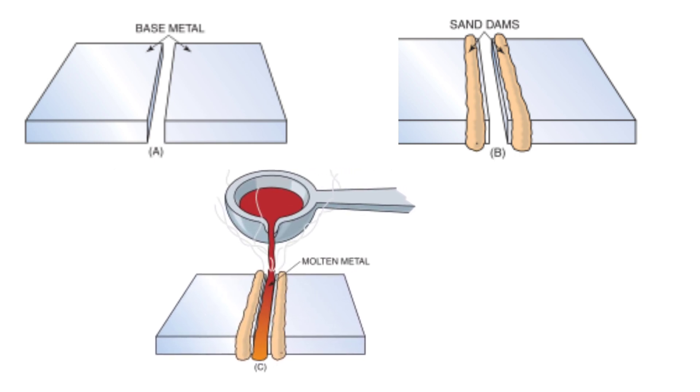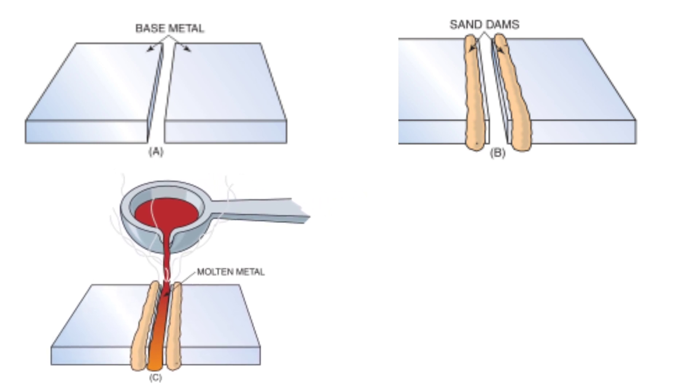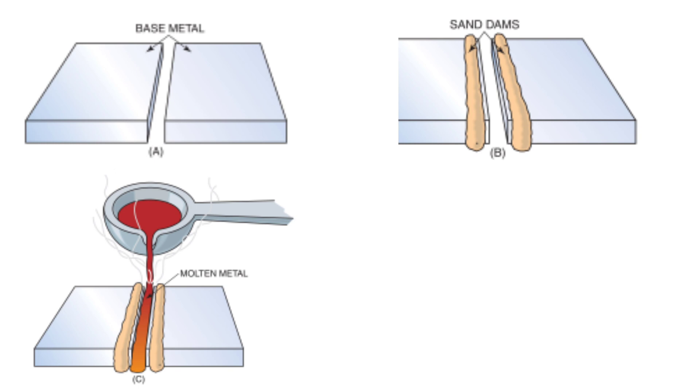Diagram C: Now, the molten metal is poured in between the two base metals. Sand dams are made accordingly to withstand the high temperature of molten metal. After pouring molten metal, allow for a few minutes to cool down the temperature and solidify.